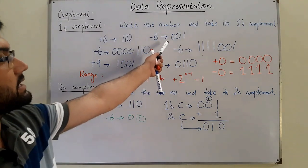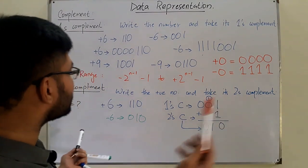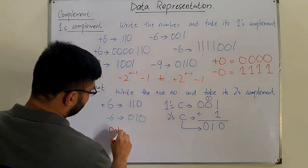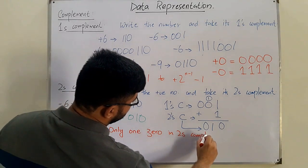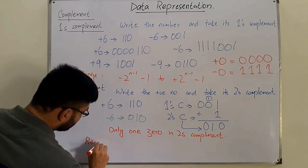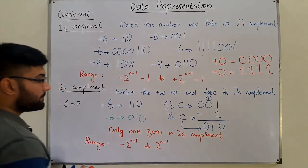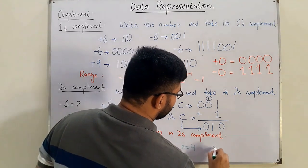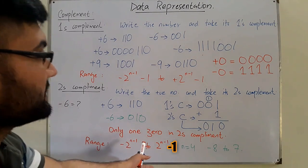In two's complement, there is only a single zero — the positive zero — because the two's complement of zero is again zero. The range of the two's complement method is from negative 2^(n-1) to positive 2^(n-1) − 1. For example, with four bits (n=4), we can represent numbers from negative eight to positive seven.